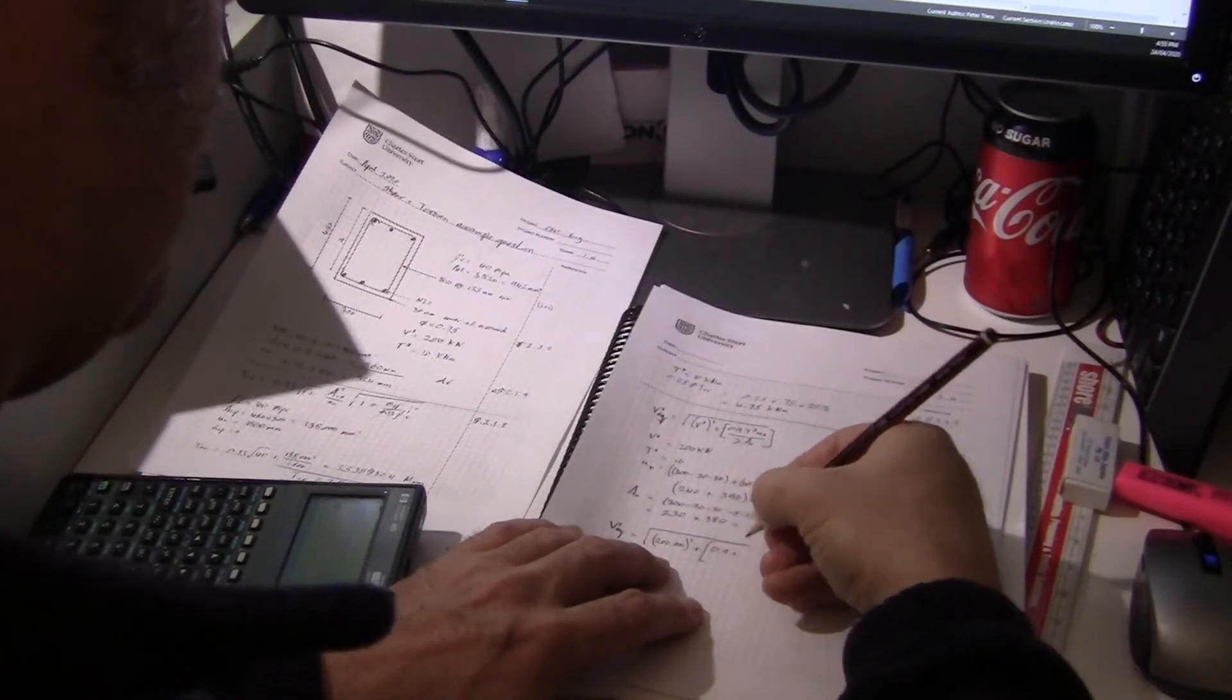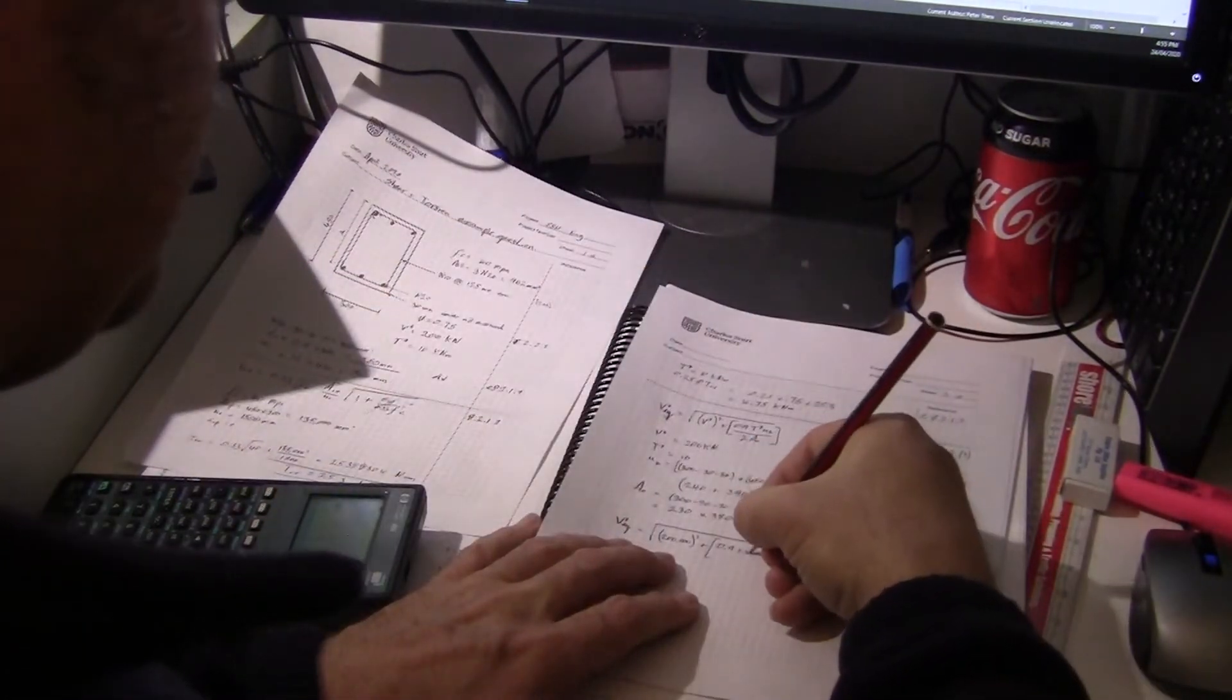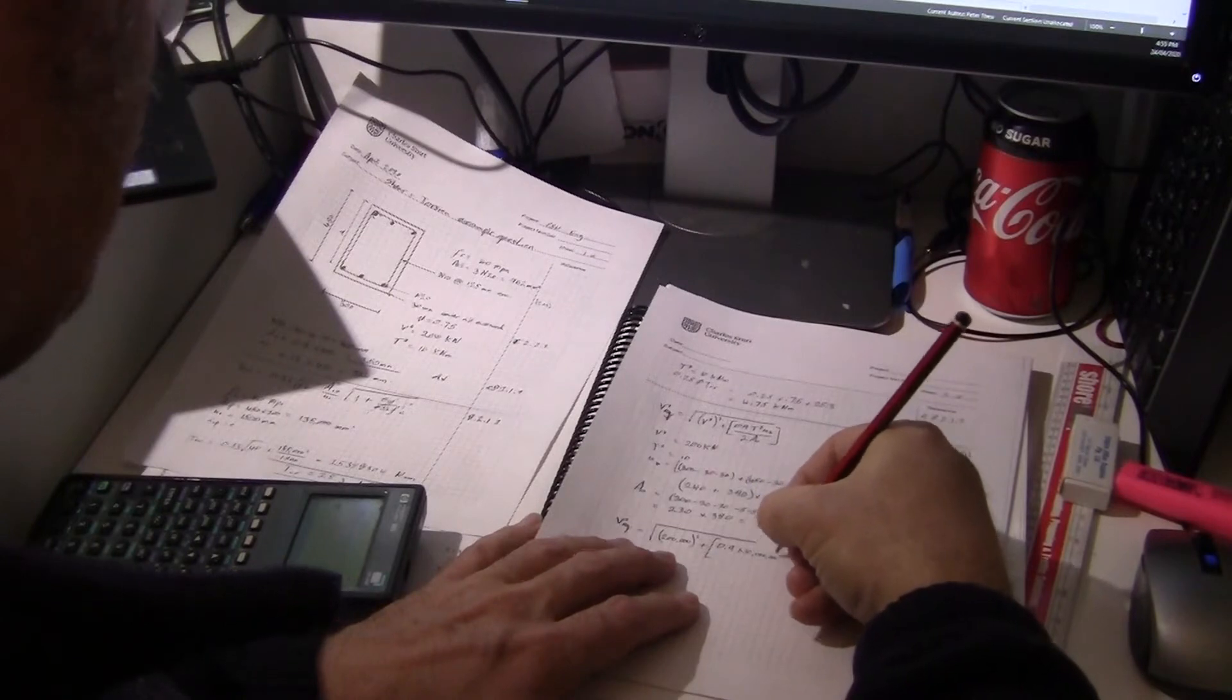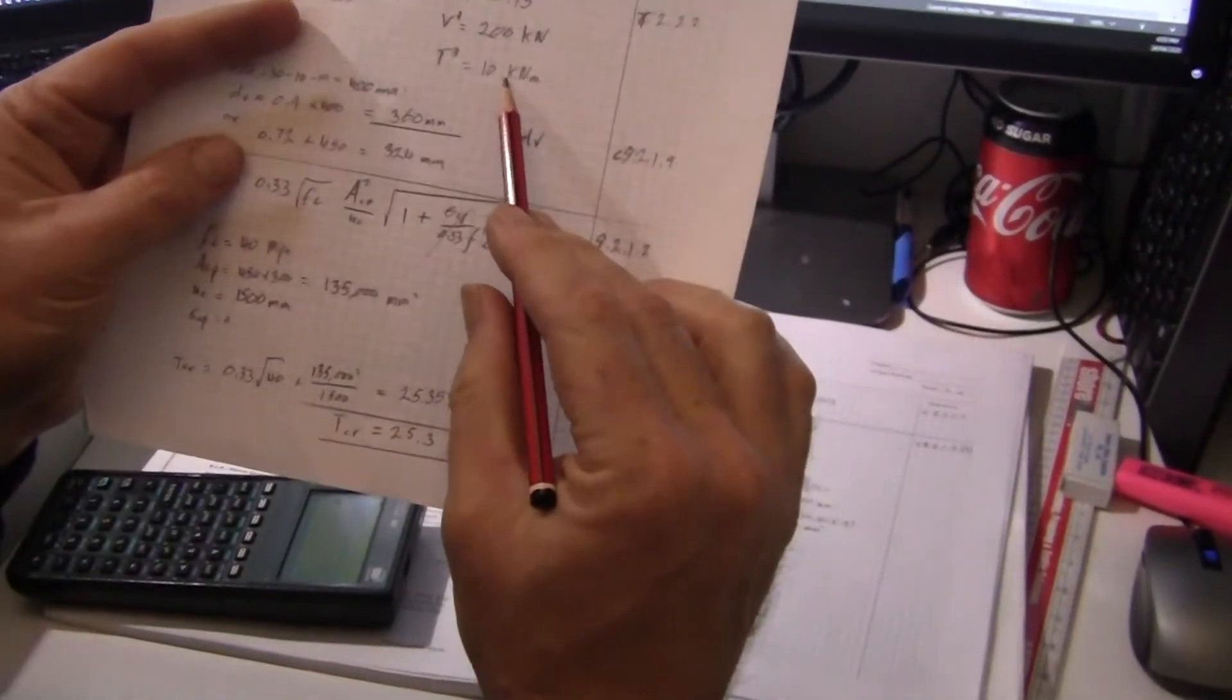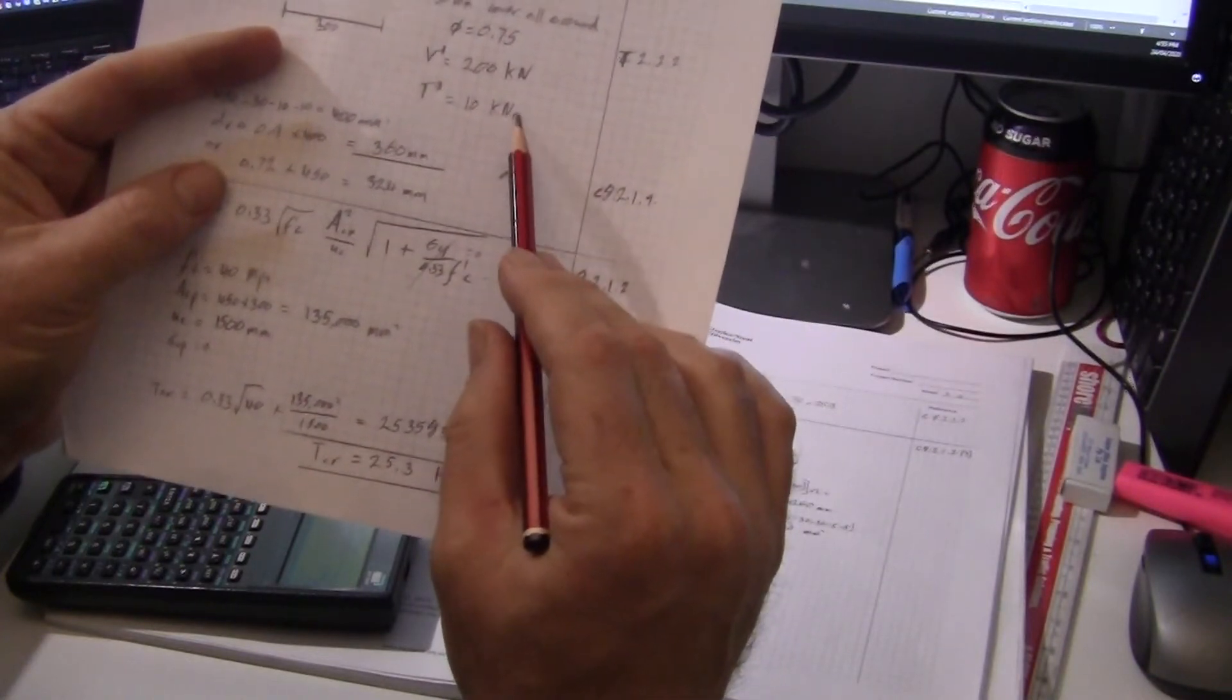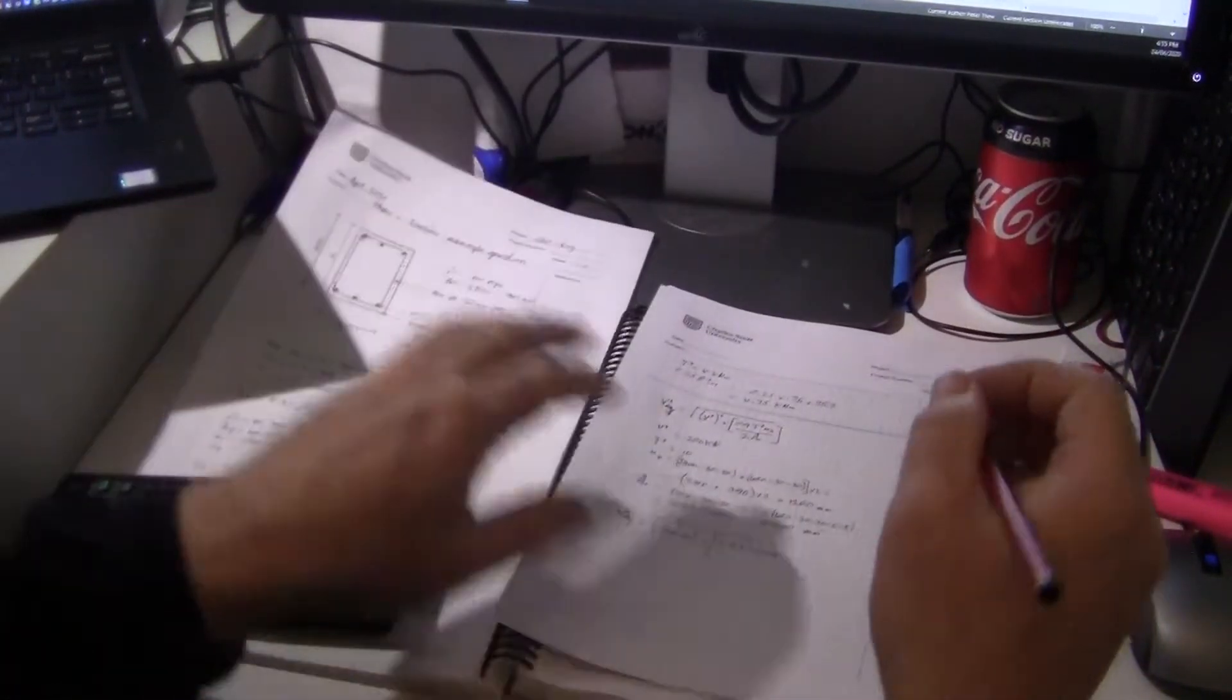0.9 times now our T has to be newtons which is 10 million. And that's because 10 kilonewton meters to get rid of the kilo you'd multiply by a thousand to get rid of the meters into millimeters and other thousands. That's 10 million newton millimeters.